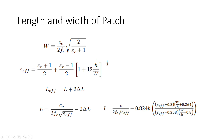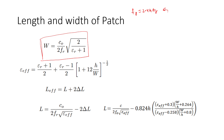To calculate the length and width of the patch, the formula for width is: W = c₀ / (2·fr) · √(2 / (εr + 1)). The frequency of resonance for us is 2.4 GHz and εr is 4.4 for the FR4 material. The height of the substrate is 1.6 mm. Substituting these values, the width comes out to be 38.03 mm theoretically, and ε_effective is 4.08.